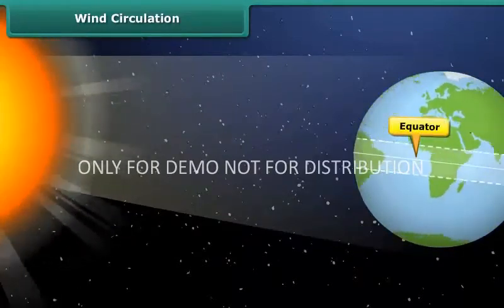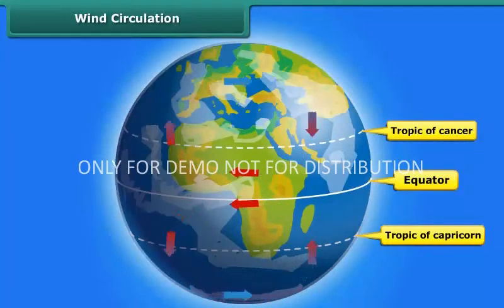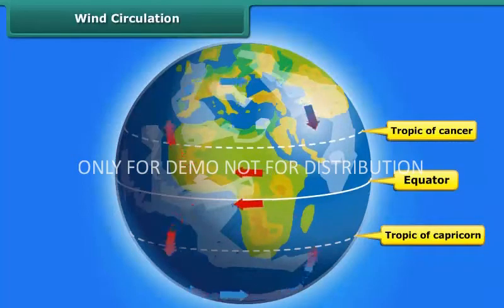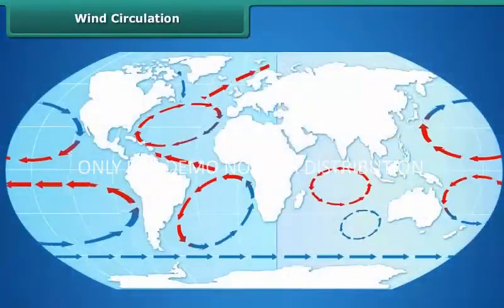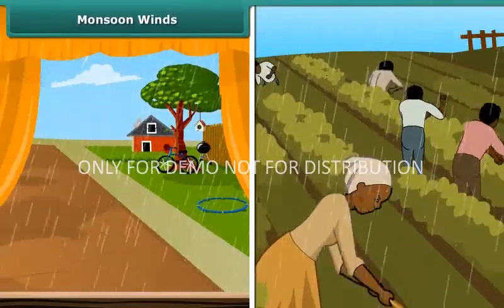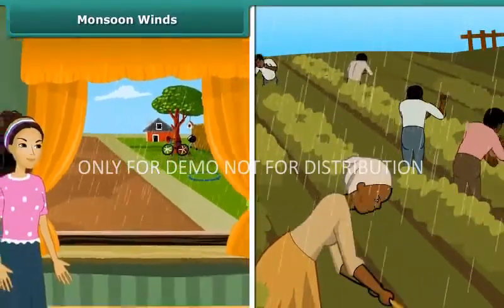The equator is the region which receives maximum heat from the Sun compared to the polar regions. The air in these regions gets warm, the warmer air rises up, and the colder air coming from the polar regions moves in to fill the empty space. This is how wind circulation is set up from the poles to the warmer latitudes.